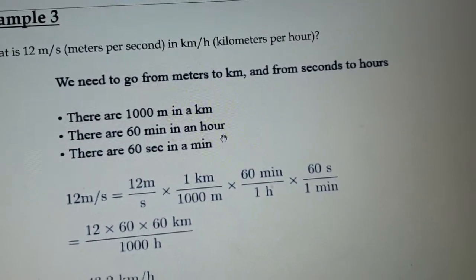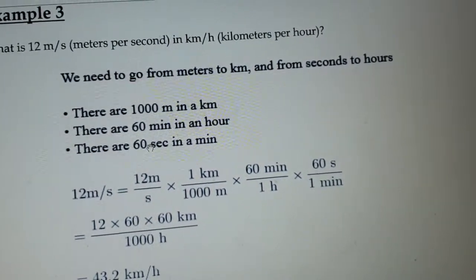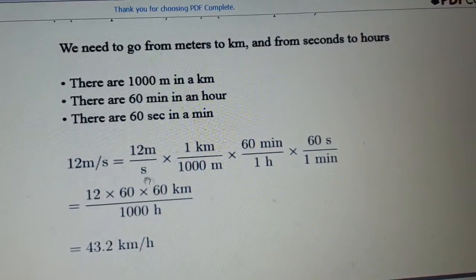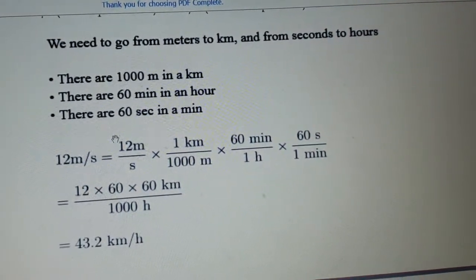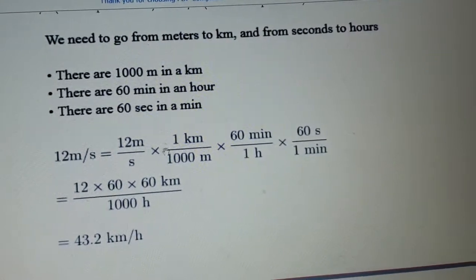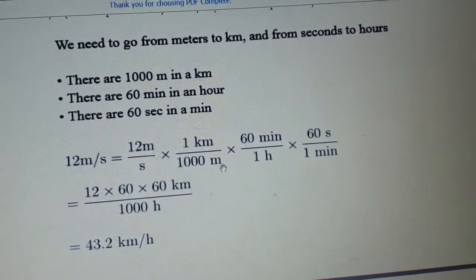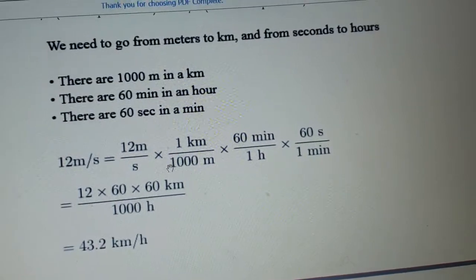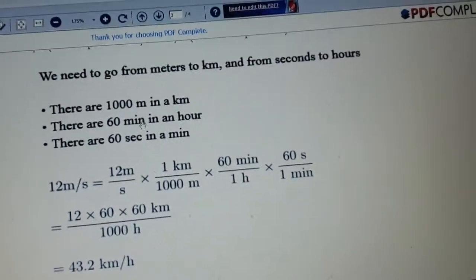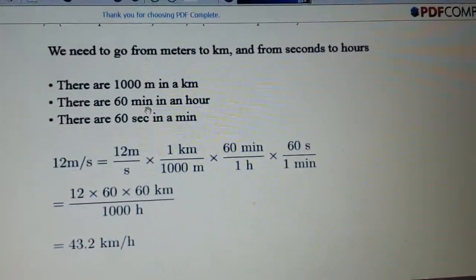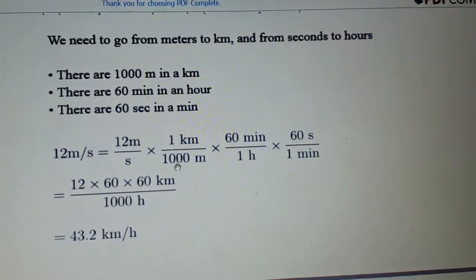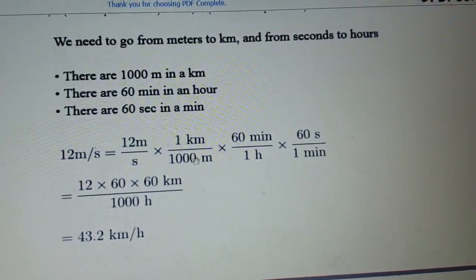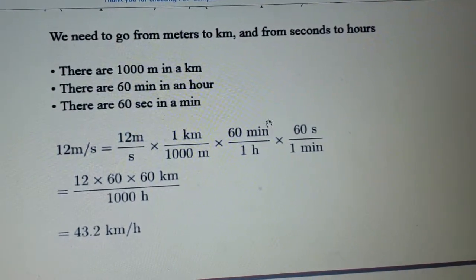In one hour we have 60 minutes; in one minute we have 60 seconds. So we rewrite 12 meter per second and multiply by one kilometer divided by 1,000. We are dividing by 1,000 because we are converting from the smaller unit, meter, into the bigger unit, kilometer — opposite of the previous example where we multiplied.